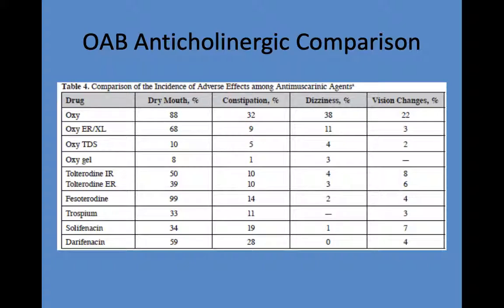Looking at a side effect comparison, oxybutynin immediate release has the highest rate of side effects like dry mouth and constipation. Many patients see resolution of adverse effects when switched to oxybutynin ER, which is still fairly inexpensive and covered by insurance. As you go down the list to newer agents, insurance coverage decreases, so you may want to try oxybutynin IR then ER before moving to others.